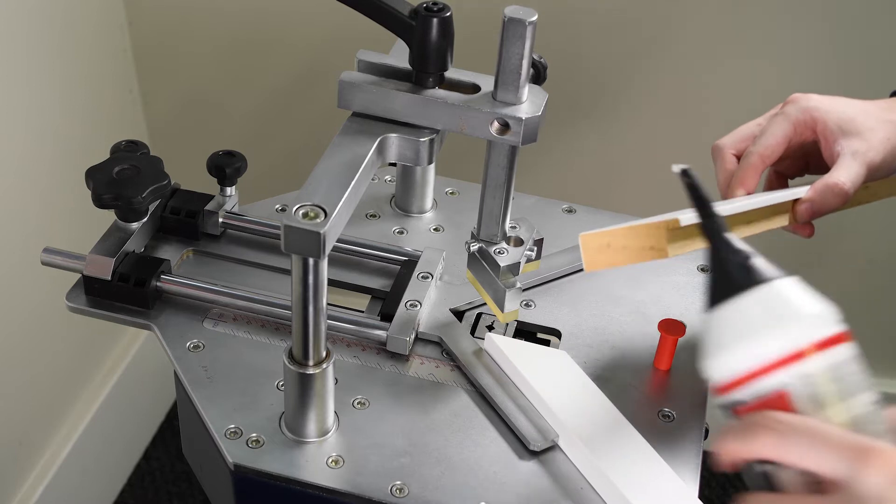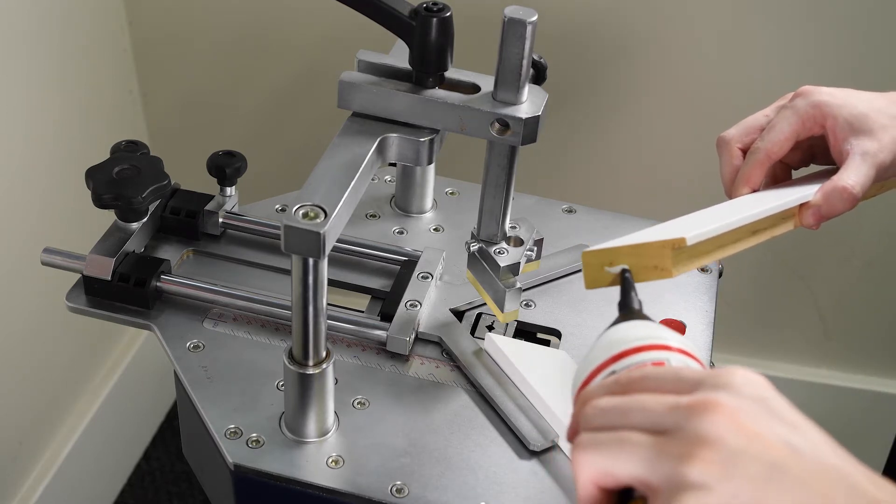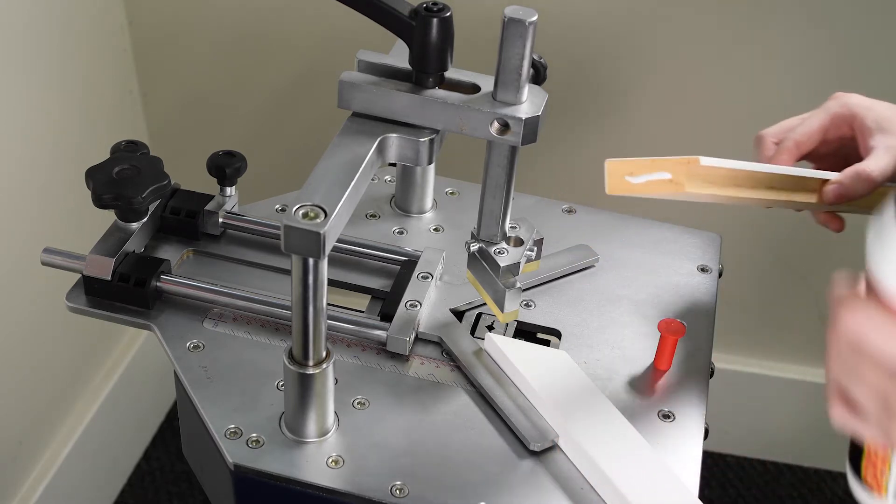Before we insert the V nails, it's best to use some high-quality wood glue like this Mecol Special PVA Wood glue to help strengthen the corners.